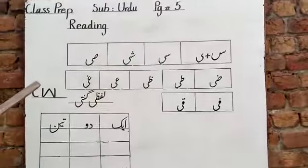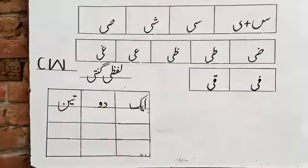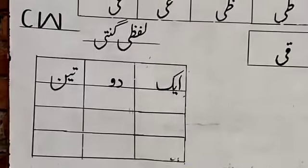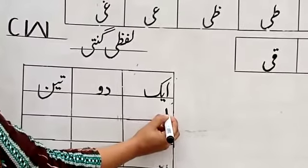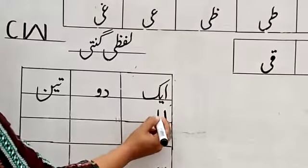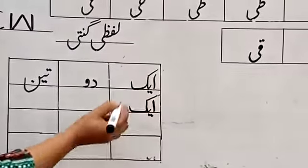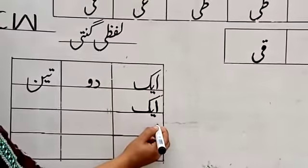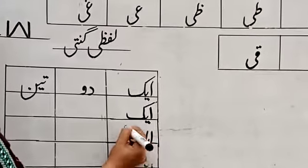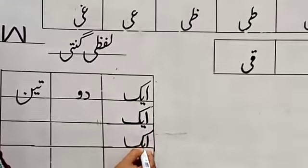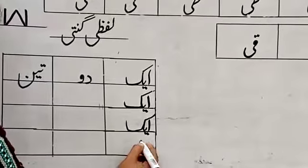Today we will do class work also. One, three, four — it looks like it is okay. One, one, one, seven, six, six one, seven, nine, seven.